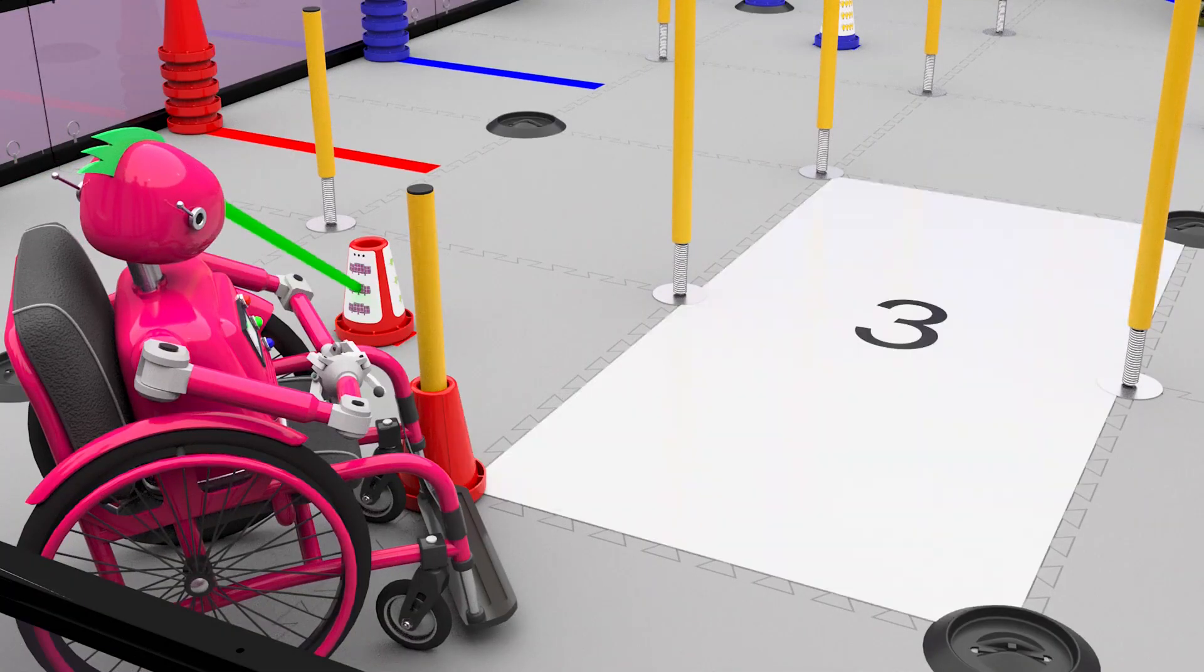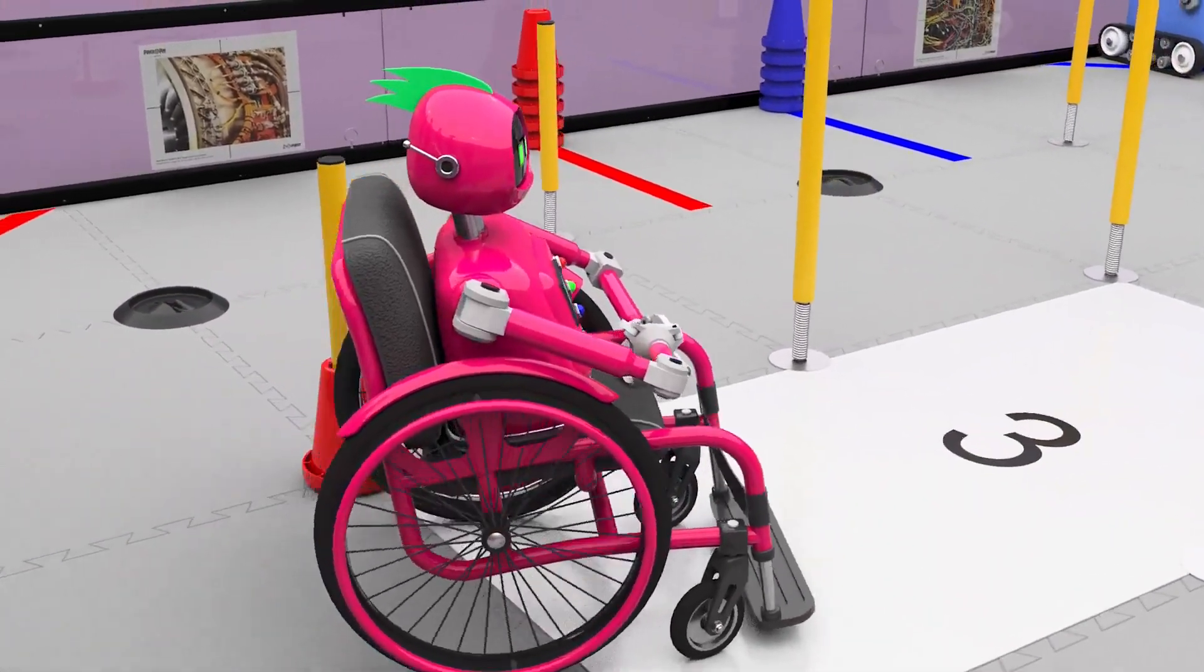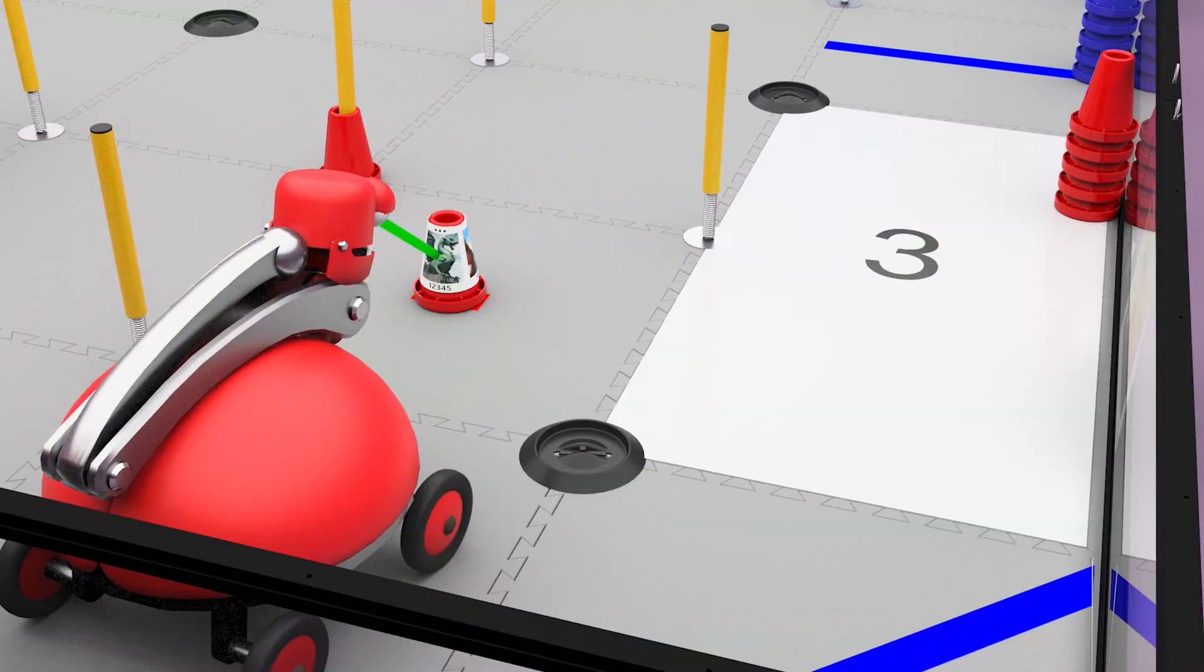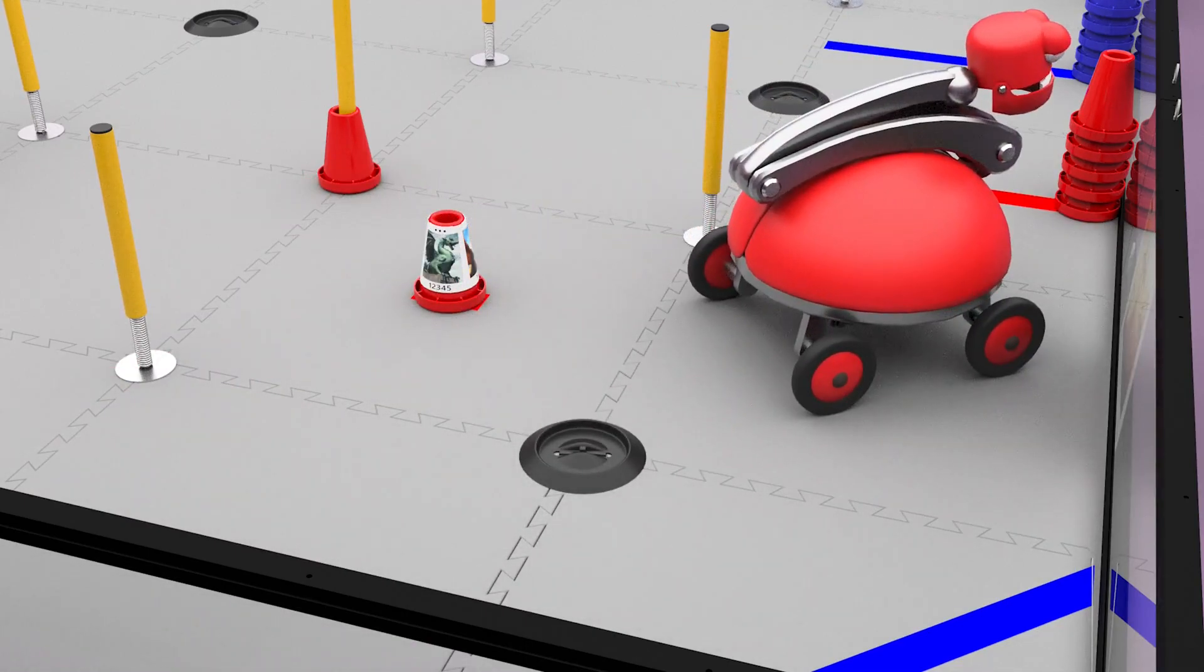If a robot's sensors correctly read the randomized signal, it can park in the corresponding signal zone to earn 10 points. However, parking in the proper signal zone shown by a custom signal sleeve will earn 20 points.